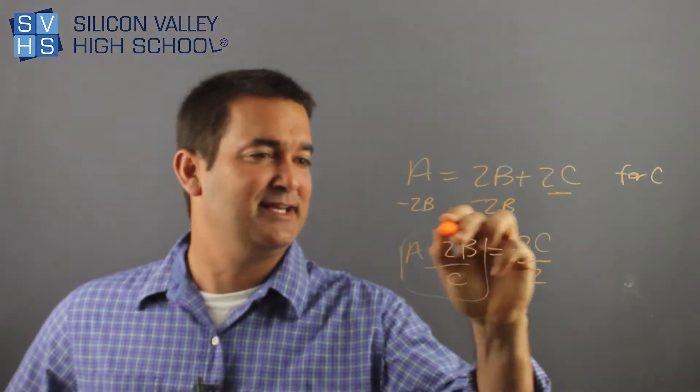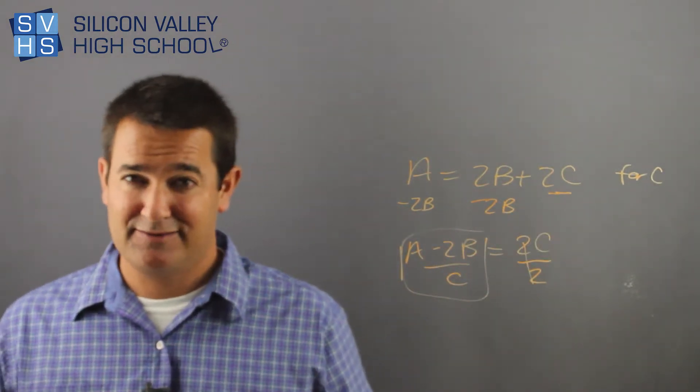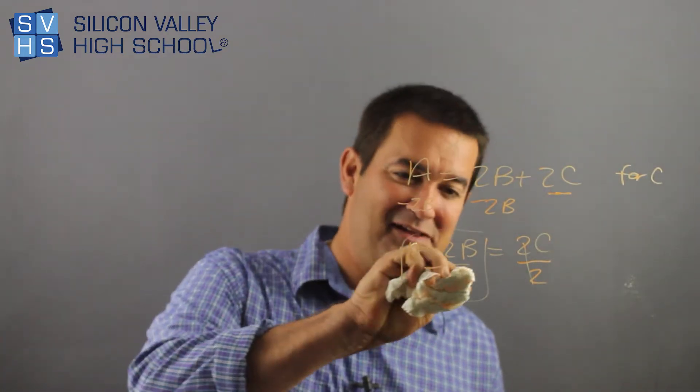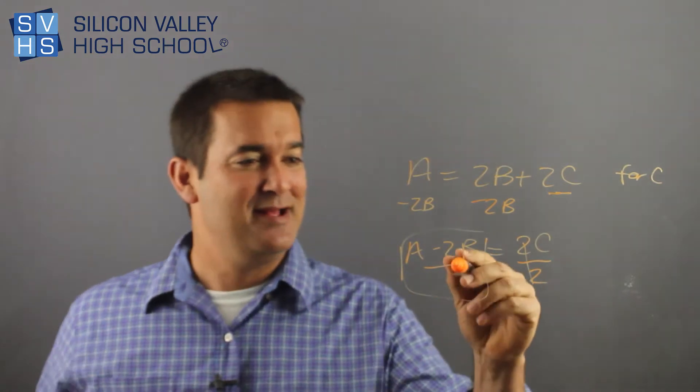Divide both sides by 2. And this is your answer. Here, C equals A minus 2B over C. Oh, I've made a mistake. World. Internet world. Hopefully you caught that. It's over 2.